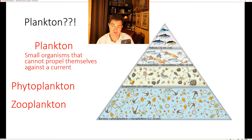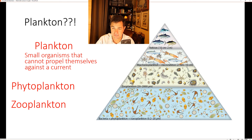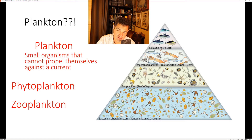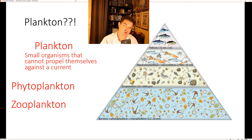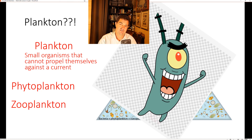In a marine ecosystem, the role of producers is more complex than on land. Those organisms are called plankton — small organisms that cannot propel themselves against a current, so they drift based on currents and tides. Plankton come in two groups: phytoplankton, which are more like the plant or algae types, and zooplankton, which are more like the animal types.